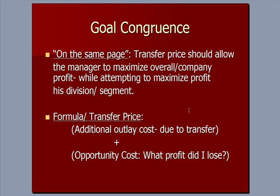Specifically, that transfer price should allow the manager to do two things: first, to maximize the overall company profit, while also attempting to maximize the profit of his division. So if you're working for Sarah Lee and you're in the division that makes donuts, you want a transfer price that maximizes Sarah Lee company-wide profit but also allows you to maximize the profit in the donut segment.